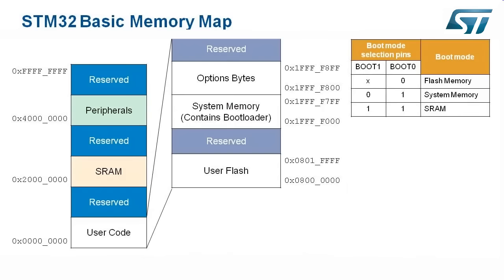Let's dive a little more into the exact structure of how the bootloader works. After a system reset, the bootloader pins are sampled. Based on the boot pin configuration, the STM32 will determine the starting address for the boot. In the case of normal operation, when booting from the internal flash memory, the starting address is hexadecimal 0x8000000.